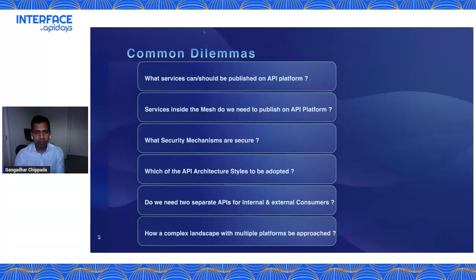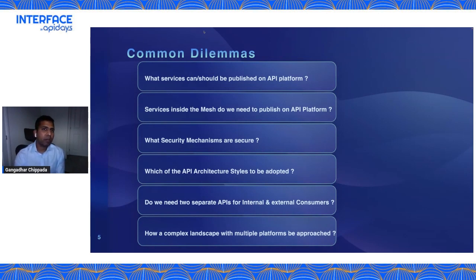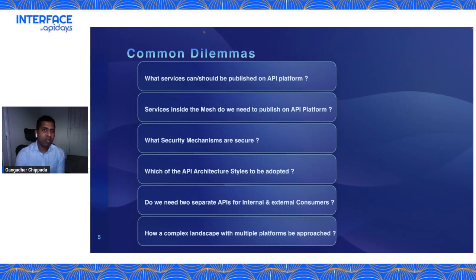The second common question is: my service is running inside the mesh — do I need to publish on an API platform? It's a design choice. If your API is not meant to be used outside the mesh, then you don't necessarily need to publish it on an API platform. But if you still want good telemetry information while sitting in the mesh, it's a good choice to integrate a micro gateway inside the mesh so that you don't feel the latency but still get all the good things that come with being on the API platform.